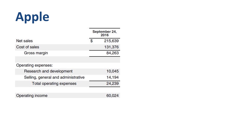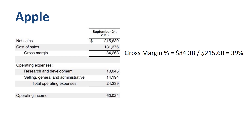The last company in our list is Apple. In a financial year ended on September 24th, 2016, Apple had revenues of 215.6 billion dollars. Gross Margin is 39% of revenue.